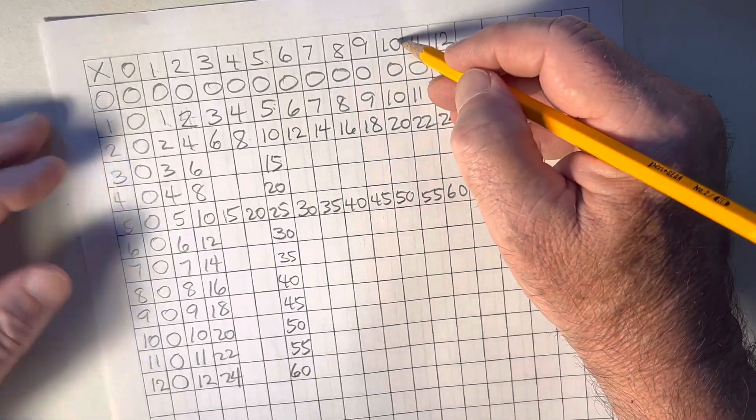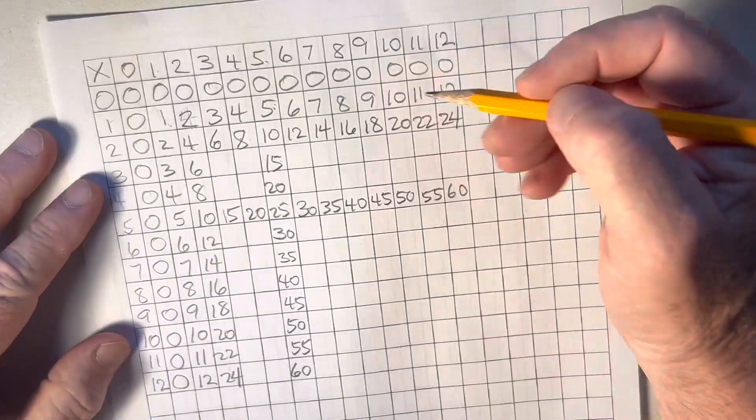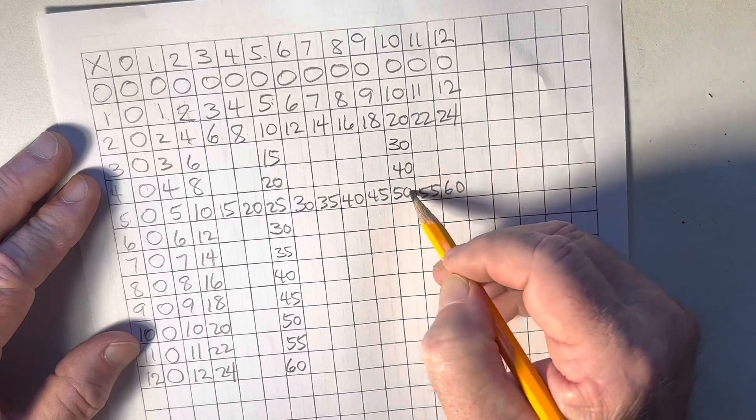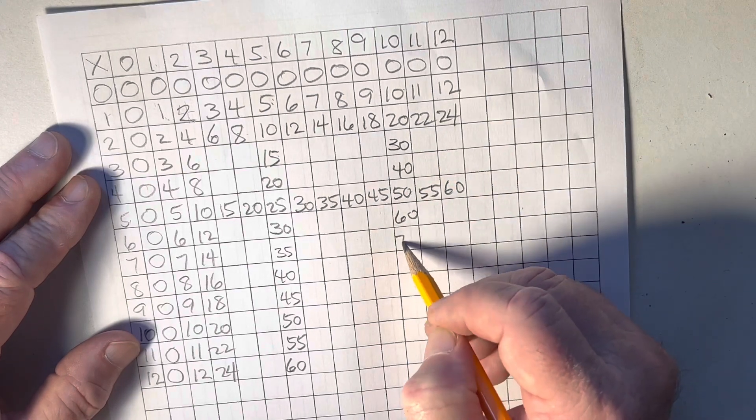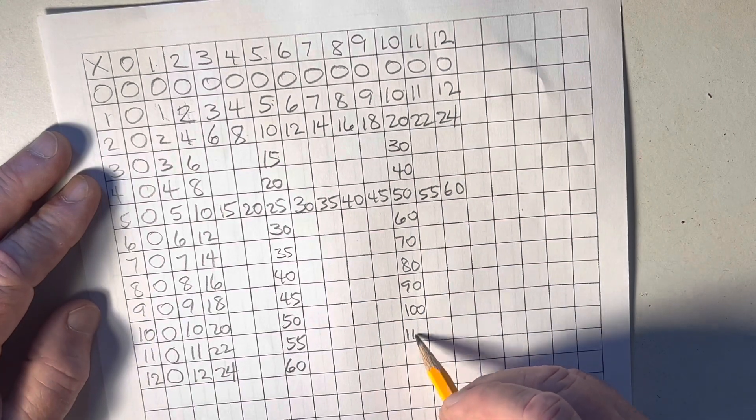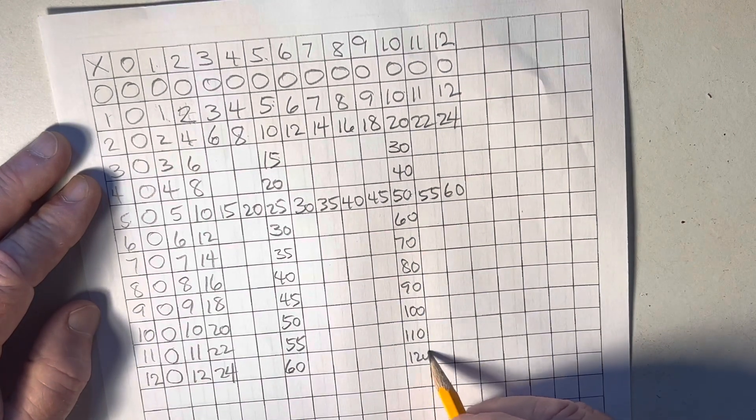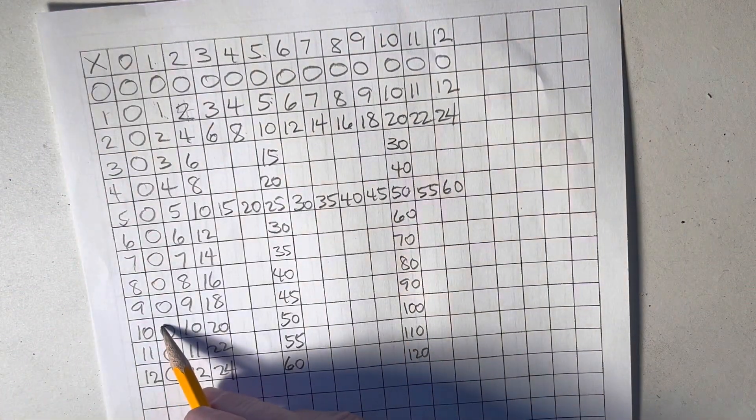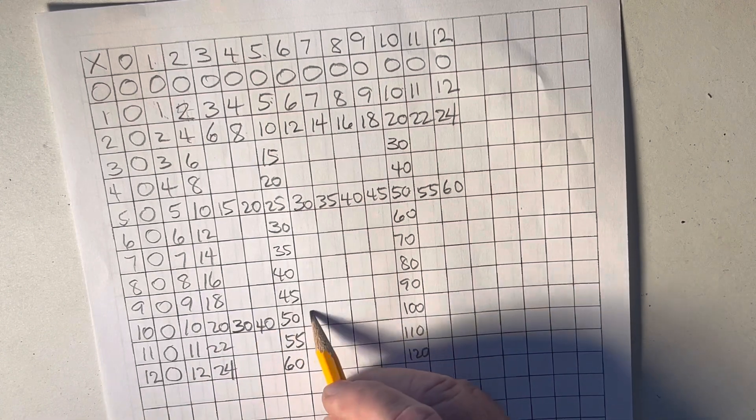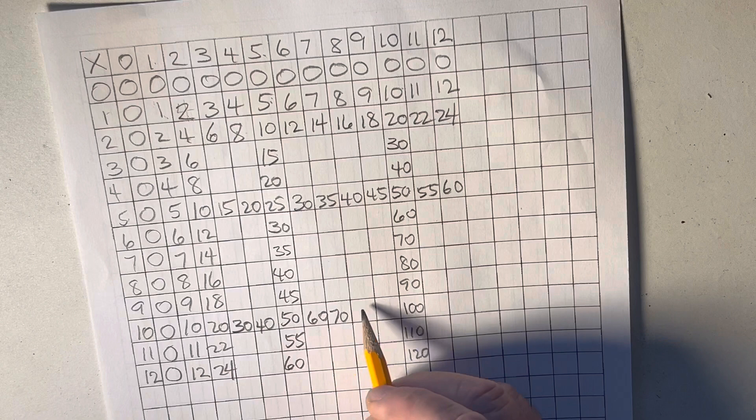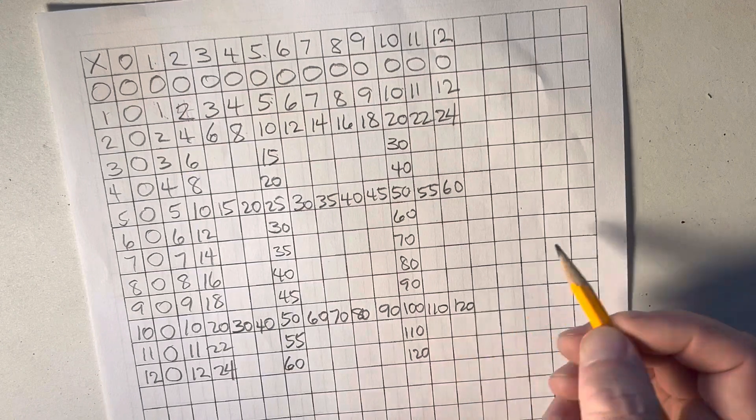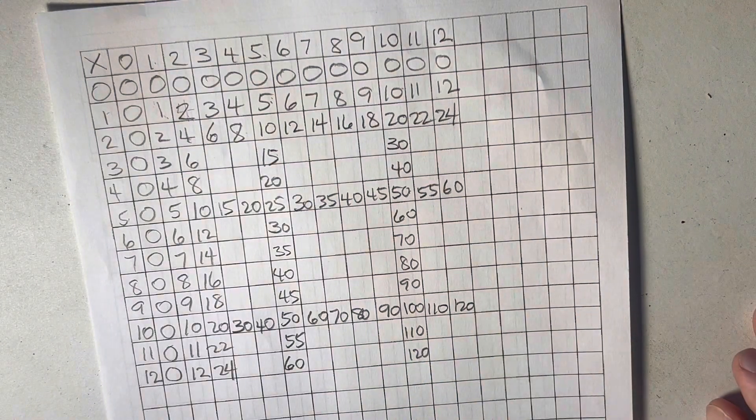Okay, now, we did the twos and we've done the fives. Now, let's go to the tens. Most of the students know those already also. 10, 20, 30, 40. So, we have 10, 20. Here's 30, 40, 50, 60, 70, 80, 90, 100, 110, 120. Remember, I'm adding 10 each time.